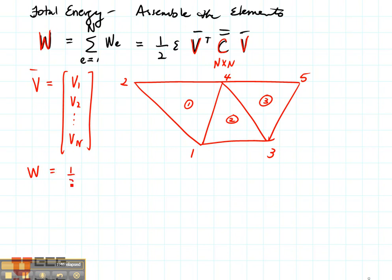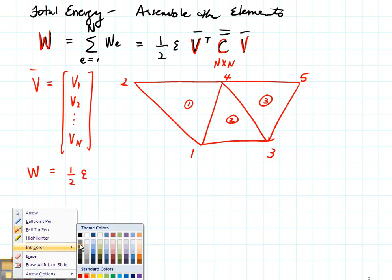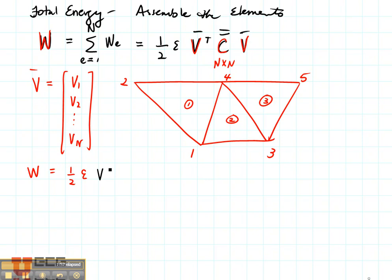So it would be one half epsilon, and then I need to make this black because these are local, V transposed C for that element number, that's element number one that would be for, times V, and this would be for element number one.